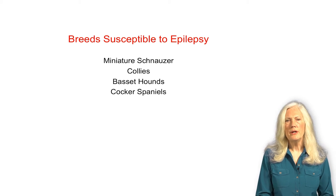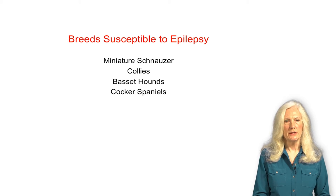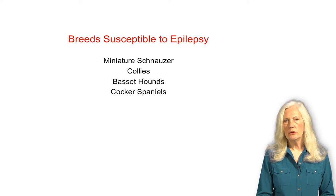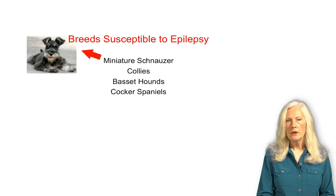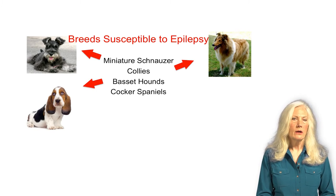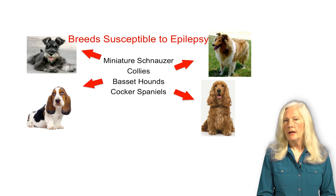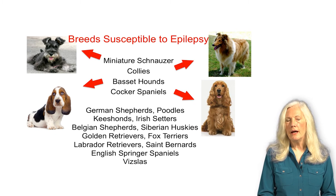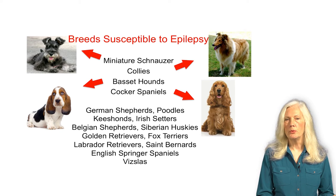Lots of breeds are prone to epileptic conditions, including miniature schnauzers, collies, basset hounds, cocker spaniels, and many highly inbred dogs today like German Shepherds and Poodles.